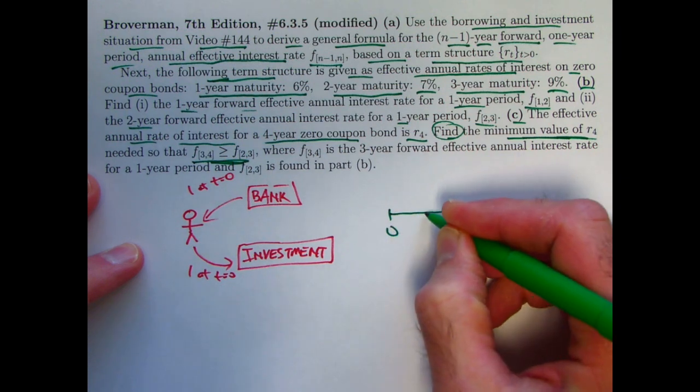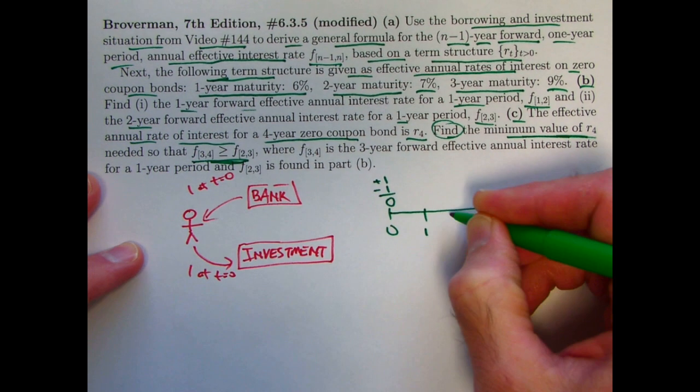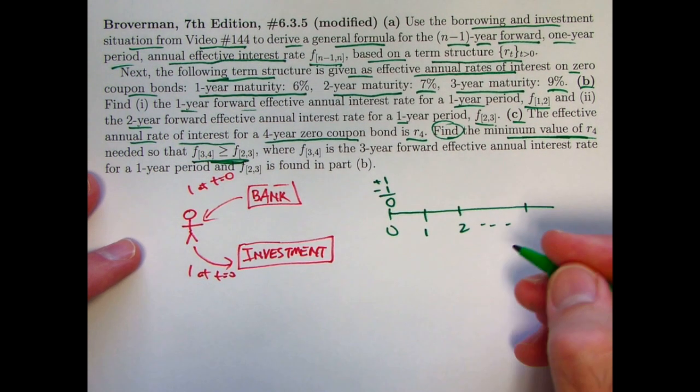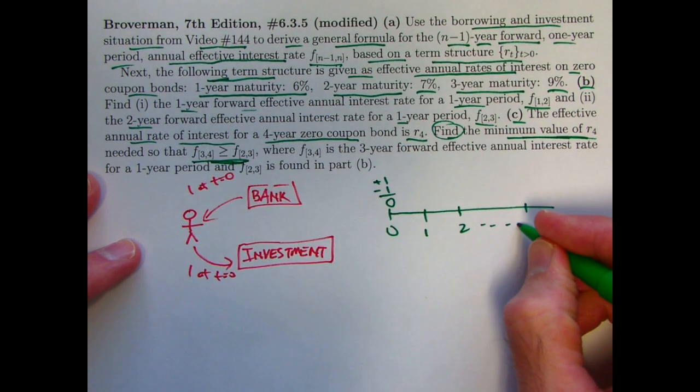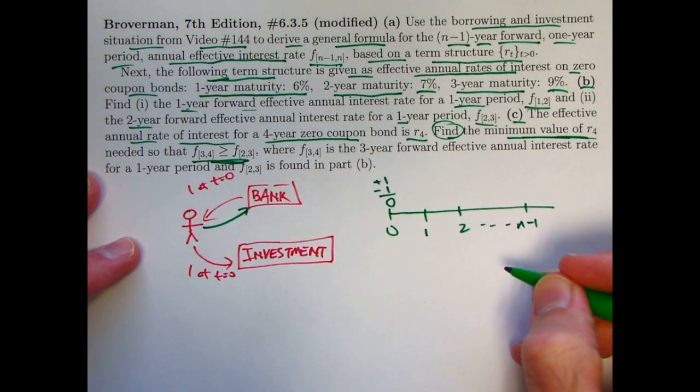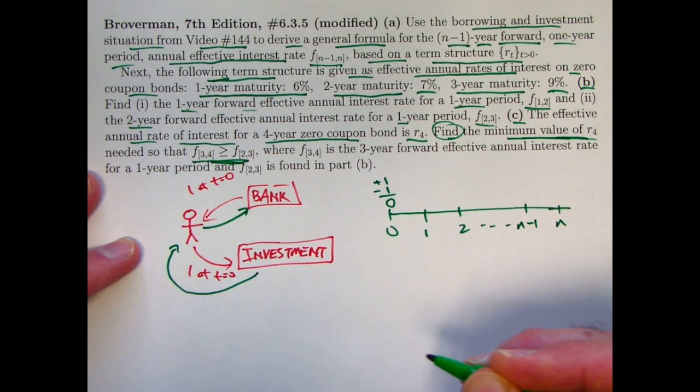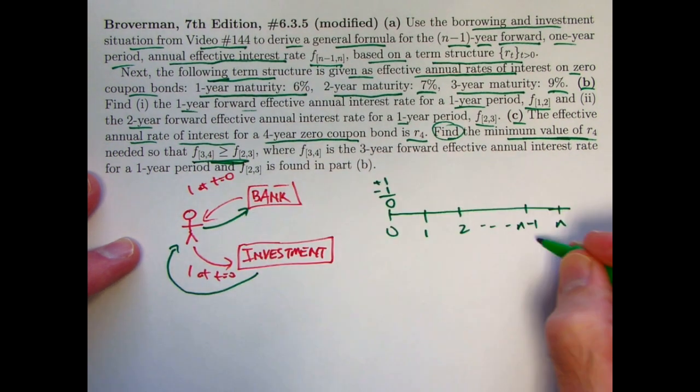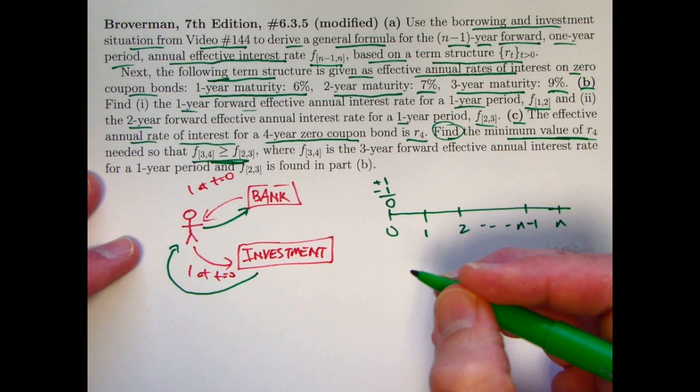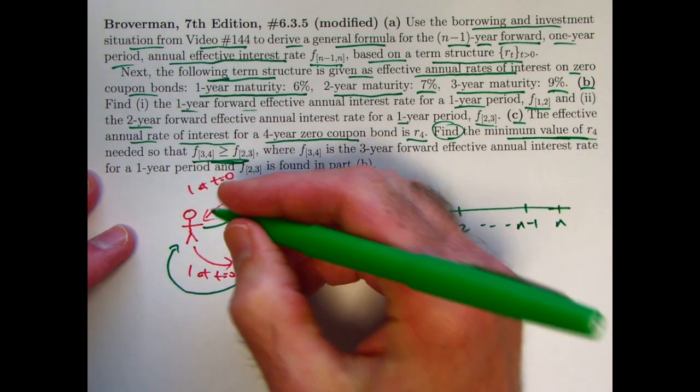Let's draw a number line here. So these transactions occur at time zero. You get one from the bank, but then you pay it out to the investment for a net outlay of zero at time zero. And then we wait. And it turns out the way we want to think about these things is we're going to pay back the loan that we took from the bank at time n minus one. And that essentially is going to be our investment. That's going to get paid back at time n minus one. And then we wait another year. And at time n, we get the return on our investment in the zero coupon bond.